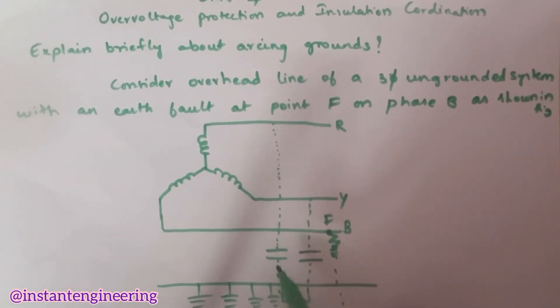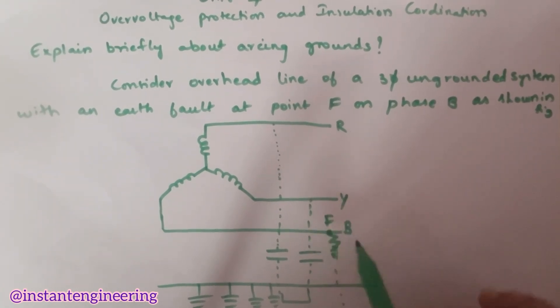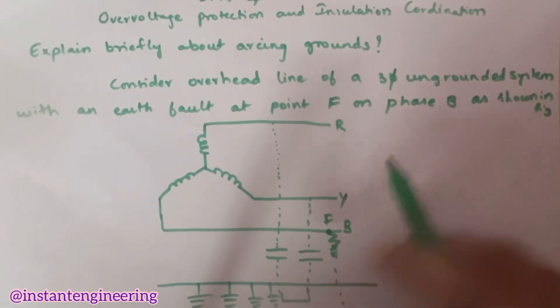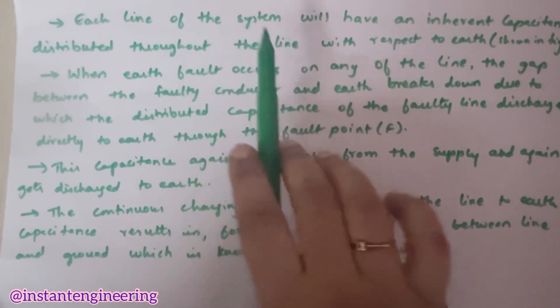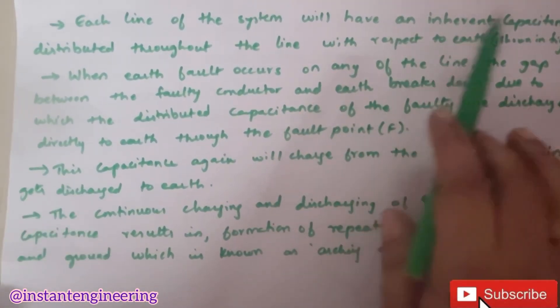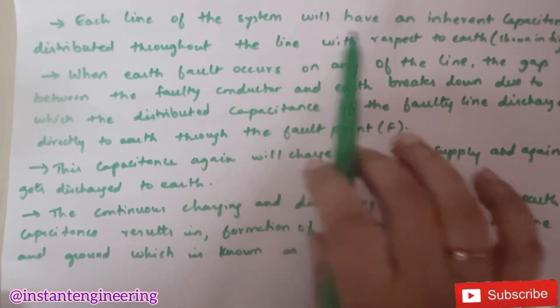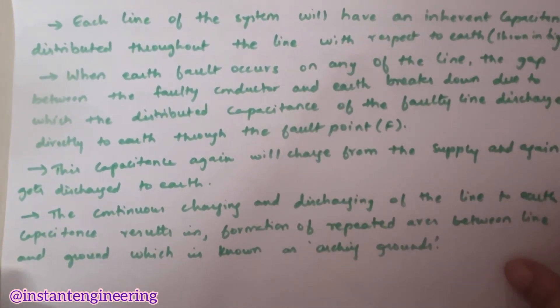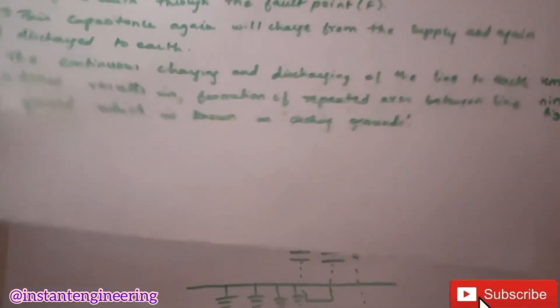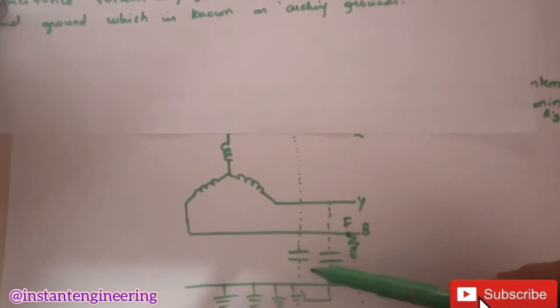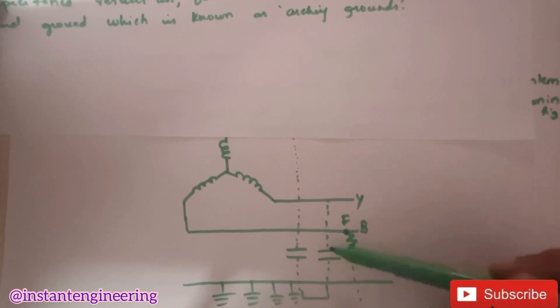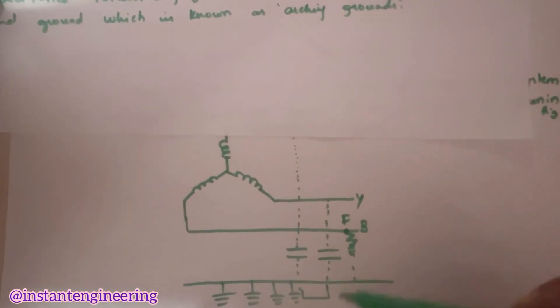So, see here, for each phase, there is one capacitor connector and across the B phase, there is some fault. We will consider fault as F. So, then we will see what happens. See, each line of the system will have an inherent capacitance distributed toward the line with respect to earth as shown in the figure. So, I will just show you, see, each of this is having a capacitor connected here, which is grounded. This is called inherent capacitance.